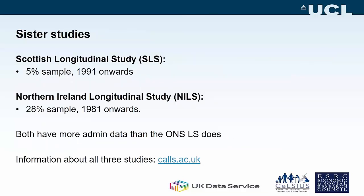There are two sister studies to the ONS Longitudinal Study. There's the Scottish Longitudinal Study, which Tom will tell you about next — that's a 5% sample with data from 1991 onwards. And then there's the Northern Ireland Longitudinal Study, a 28% sample with data from 1981 onwards. Both of these studies have more data than the ONS-LS.